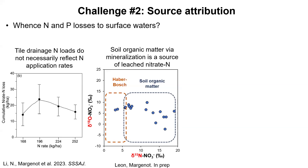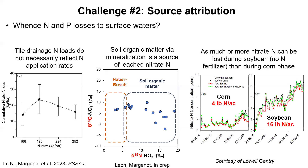That's important to manage because it's a loss of native fertility, but it's an important distinction that it's not fertilizer in origin. In a third example, data by Lowell Gentry shows that in some cases we lose more nitrogen leaching through tiles under soybean — which receives no N fertilizer — than from corn. In one central Illinois site we saw 4x more nitrate leaching under soybean than under corn, pointing to the role of soil organic matter mineralizing. This explains why we see non-linear relationships between N applied and N leached.